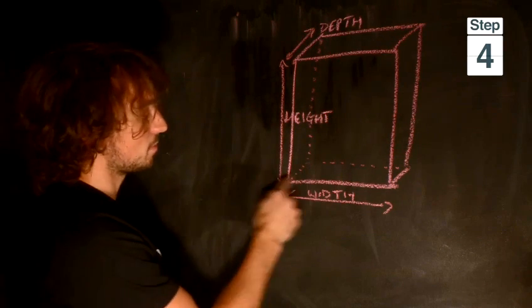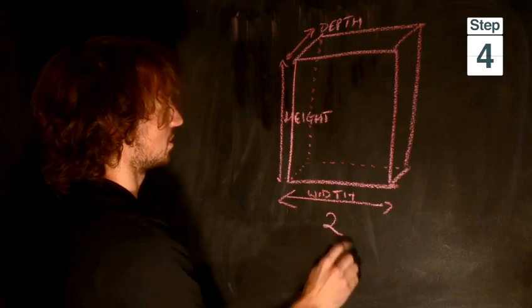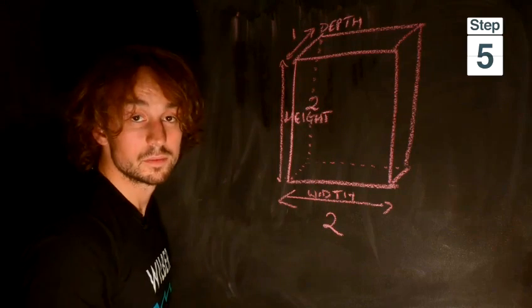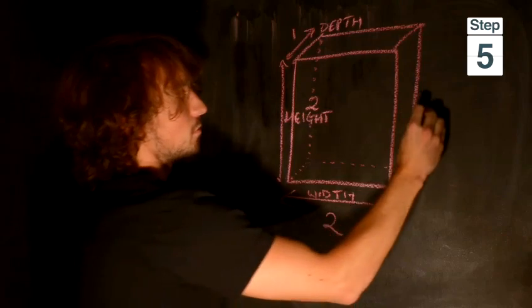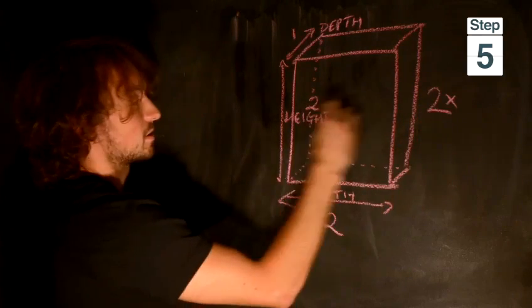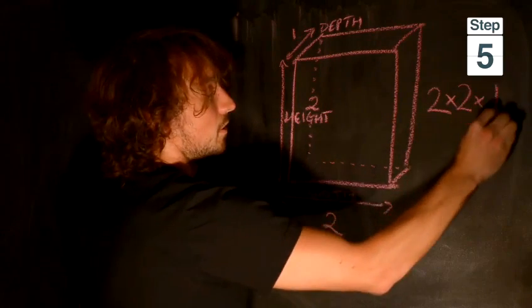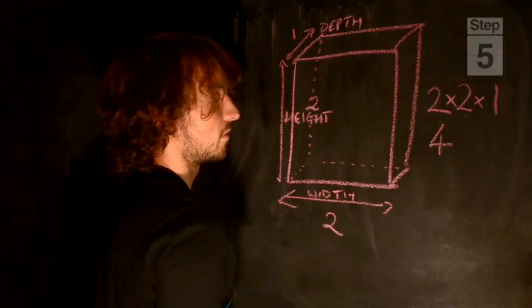Now if I measure this cube, this width, that's two foot. This height is two foot. And the depth is one foot. So to figure out the cubic feet, multiply two, the width, by the height, two, by the depth, one. Two times two is four, times one is four, so this is four cubic feet.